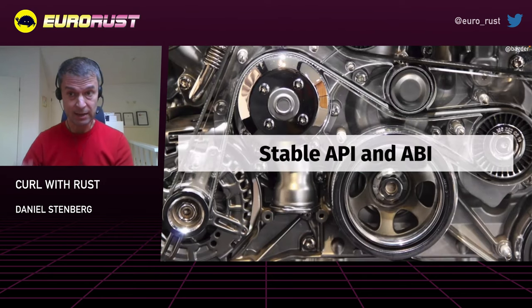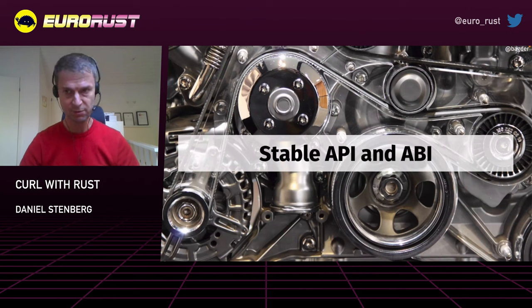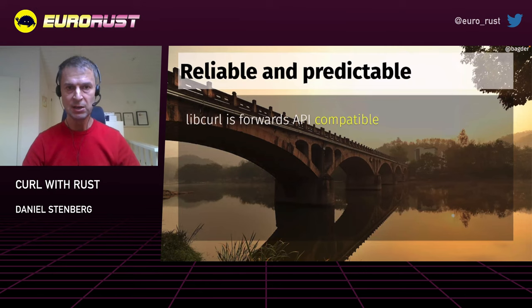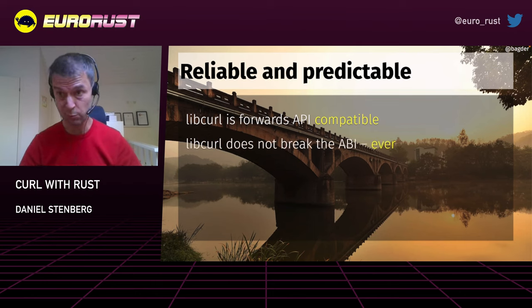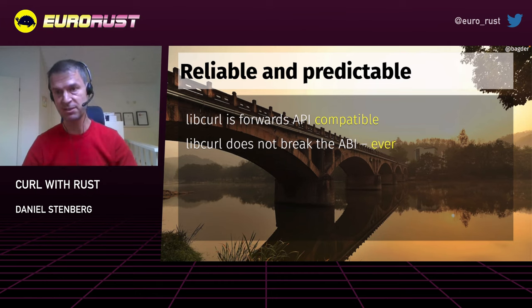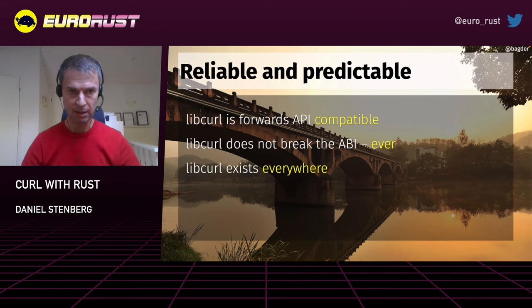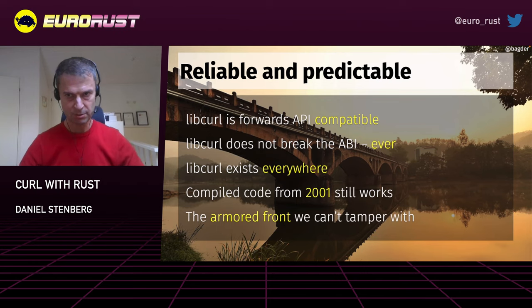Curl and libcurl's biggest sales pitch — one of the biggest reasons for its existence and popularity — is that we have a rock-solid API. We don't break that. We want to be that solid bridge of stone that's going to be there for a long time for whoever wants to use it and build stuff with it. Whatever you build today with libcurl is going to remain functional in two years, in 10 years, in most cases for 20 years by now. We haven't broken the API since 2006 at least.